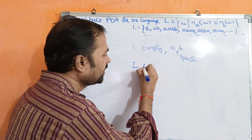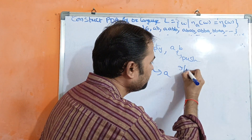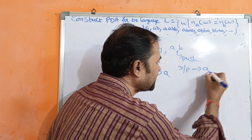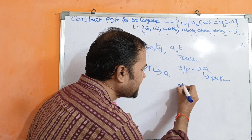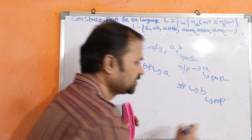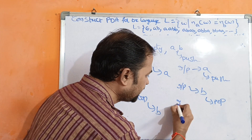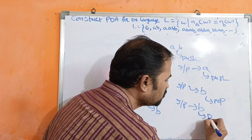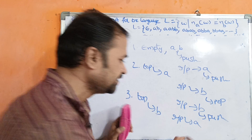The second step is: if the top of the stack is A and the input is A, then both symbols are the same, so push it onto the stack. But if the top of the stack is A and the input is B, they are different symbols, so perform the pop operation. The third step: if the top of the stack is B and the input is B, they are the same, so perform the push operation. If the top of the stack is B and the input is A, they are different, so perform the pop operation.